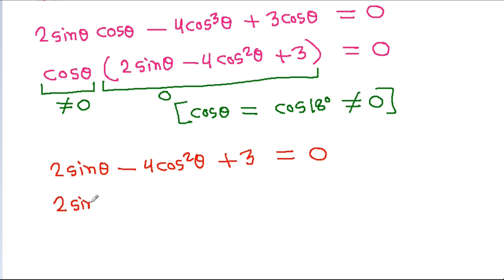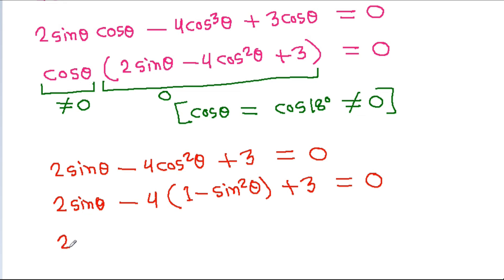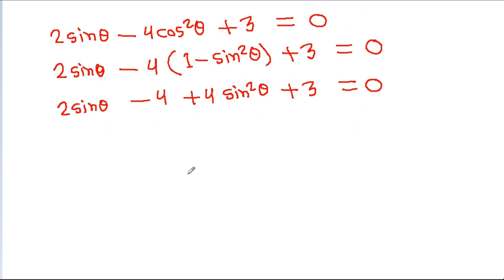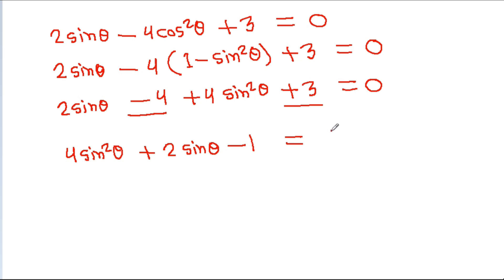It is 2sinθ minus 4cos²θ plus 3 is equal to 0. Substituting cos²θ = 1 - sin²θ, we get 4sin²θ plus 2sinθ, and minus 4 plus 3 will be minus 1, so it is equal to 0. Suppose sinθ is equal to x.